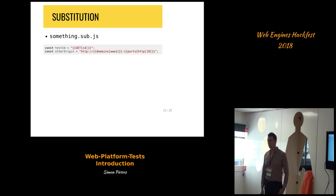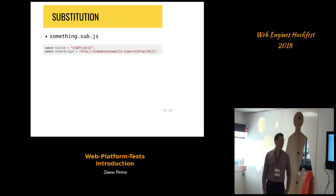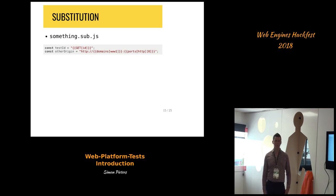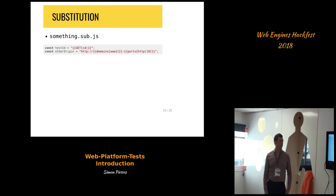The substitution feature is commonly used for changing things based on the query string in the URL. For instance, you can have an ID parameter and get that from the test itself. You can either say pipe equals sub to enable the feature, or use the file name .sub.js or .sub.html. Then you can use these brackets to get the substituted values. You also need to use this if you want to get the particular domains being used for the server.